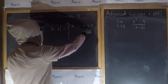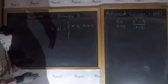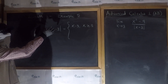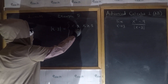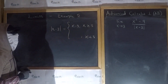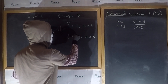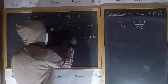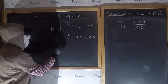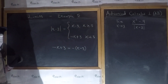For x values bigger than or equal to 3, what's inside the absolute value — x minus 3 — is going to be 0 or positive. Therefore, the absolute value says don't touch it, leave it alone. It's just x minus 3. Whereas for x values less than 3, x minus 3 is equal to the negative of x minus 3, which is 3 minus x. And 3 minus x is the same as negative x plus 3, which equals negative of the quantity x minus 3.